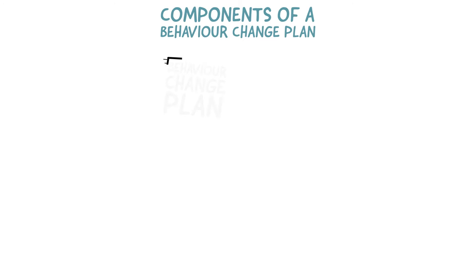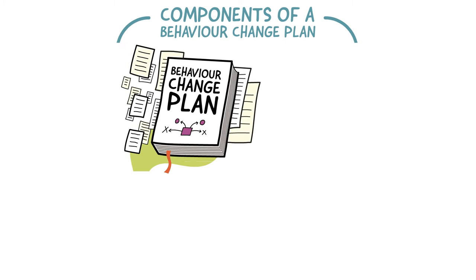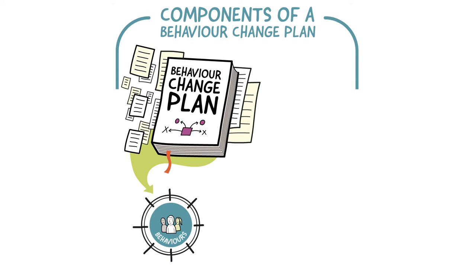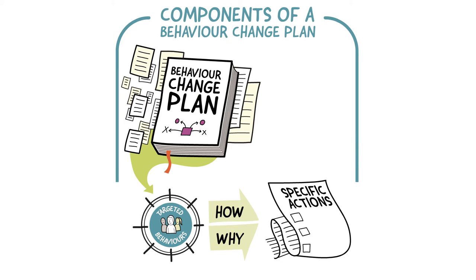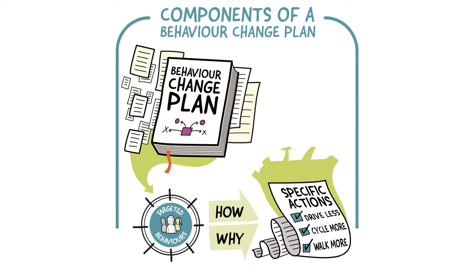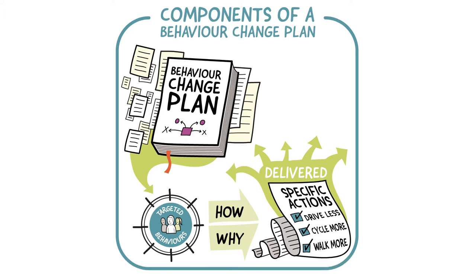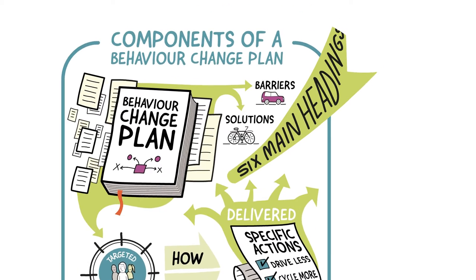Components of a Behaviour Change Plan. A Behaviour Change Plan should set out in detail the behaviours to be targeted, how and why the specific actions have been selected, and how these will be delivered. Evidence suggests that in order to change behaviour, the target audience should be involved in identifying barriers and solutions to the problem behaviour. There are six main headings which should be included.